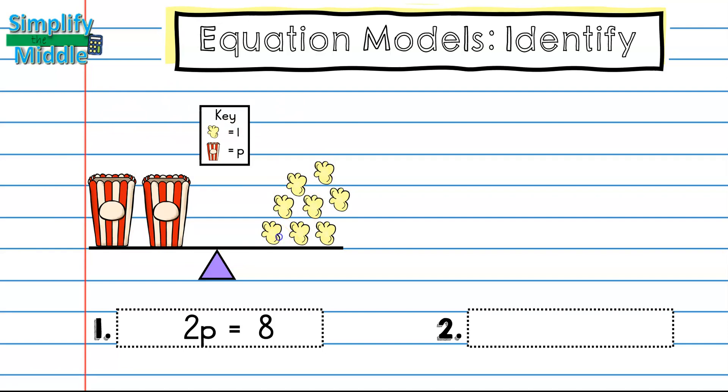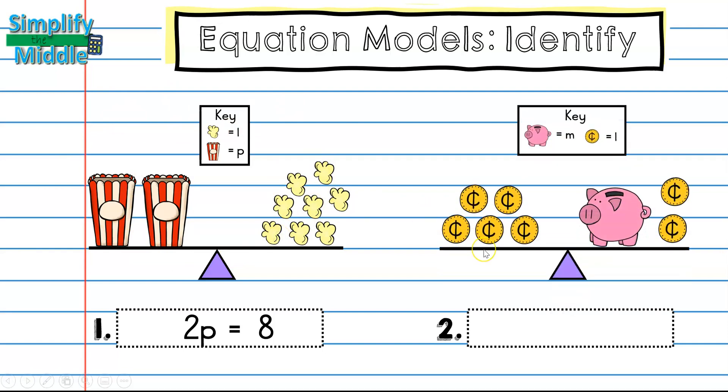Let's try another example. Here I have another key at the top and I can see that the piggy bank represents m and that the coin here represents the constant 1.